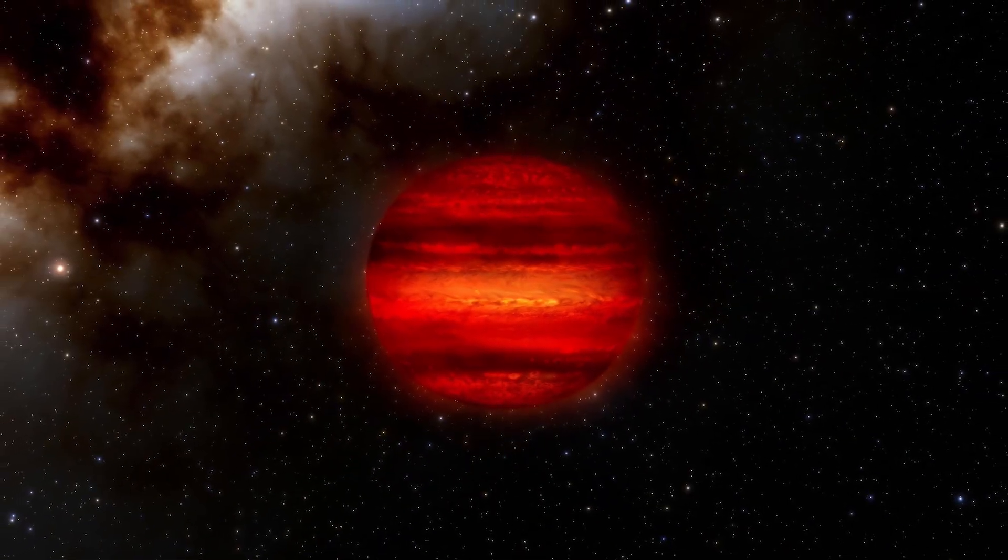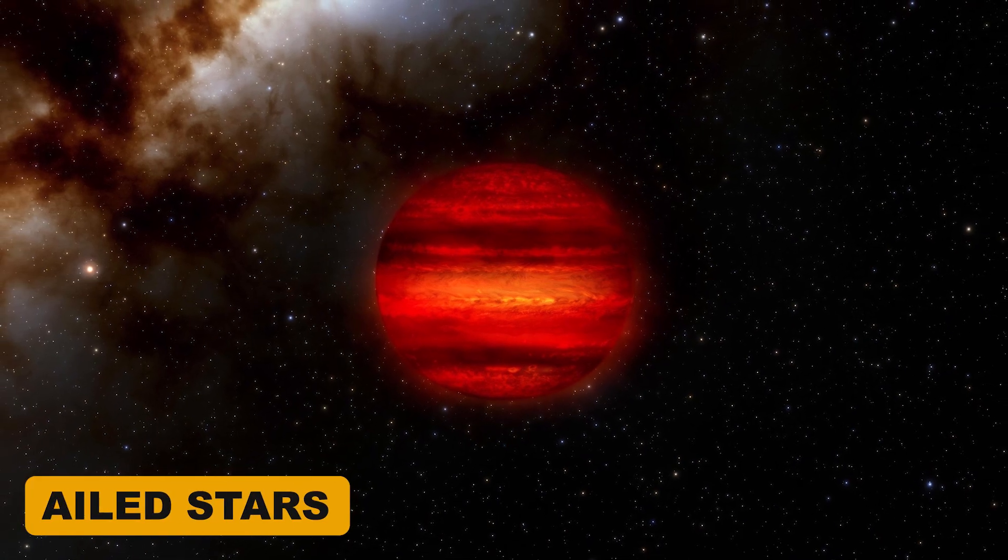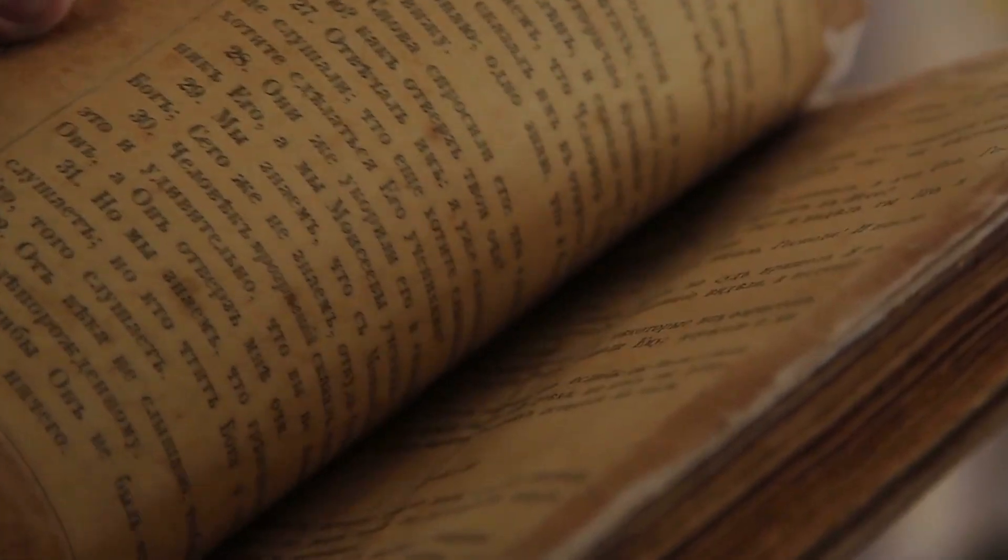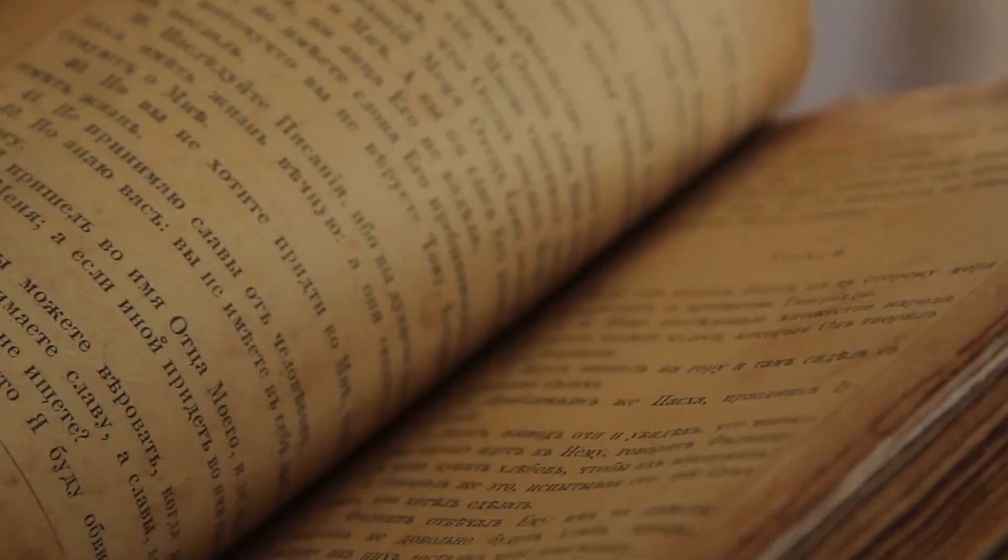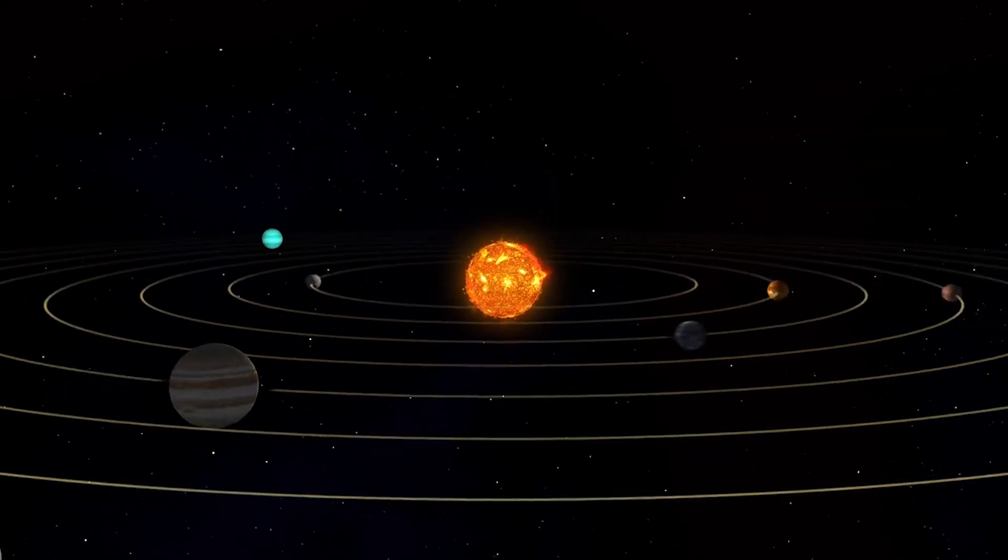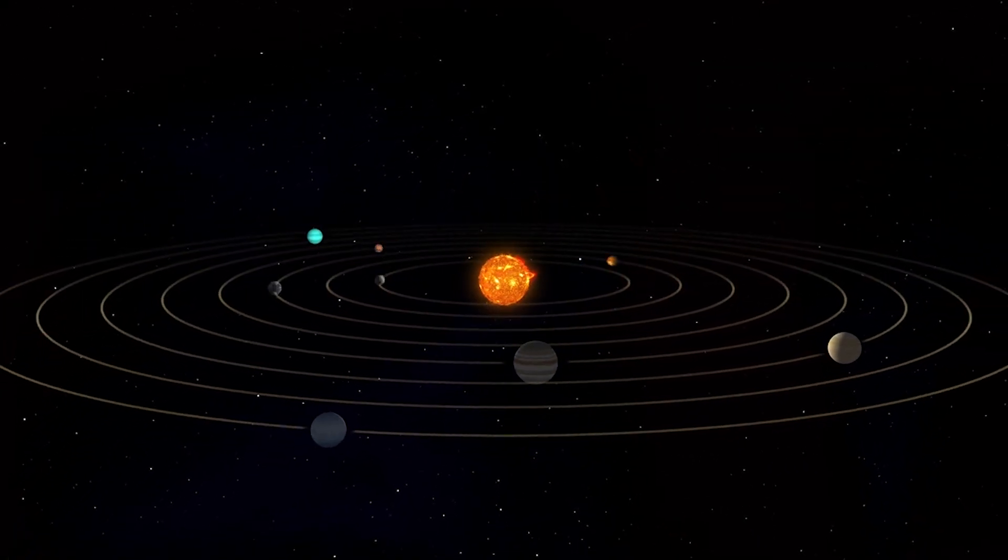These are brown dwarfs, often referred to as failed stars. Despite their name, there's nothing small about their story. Some of these objects burn with temperatures that put even the sun's surface to shame.